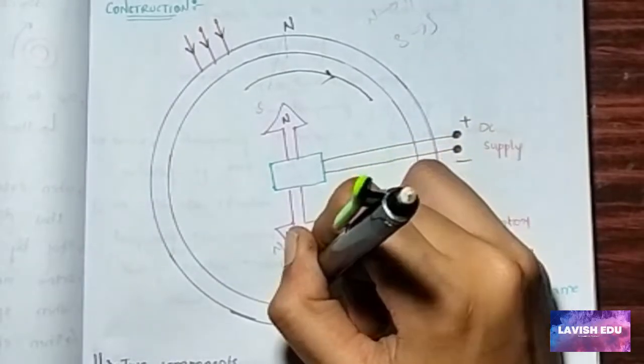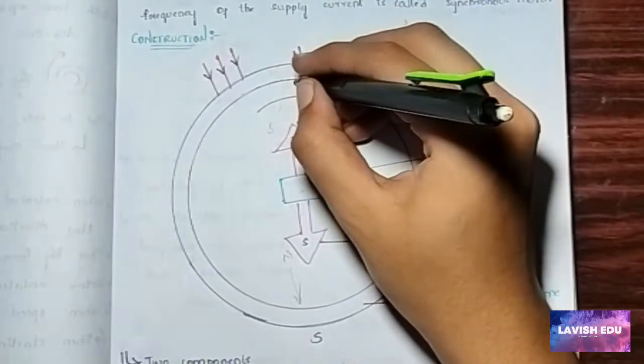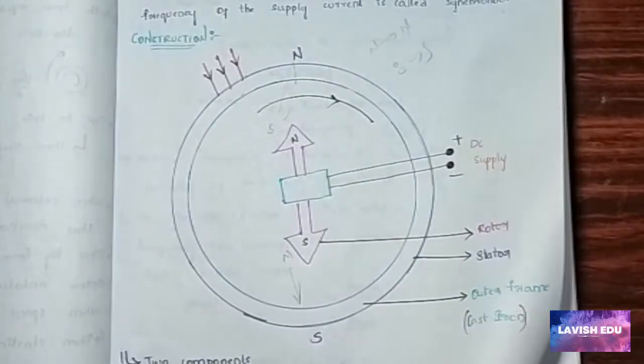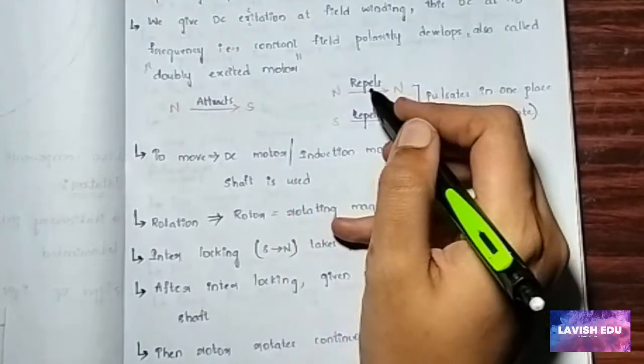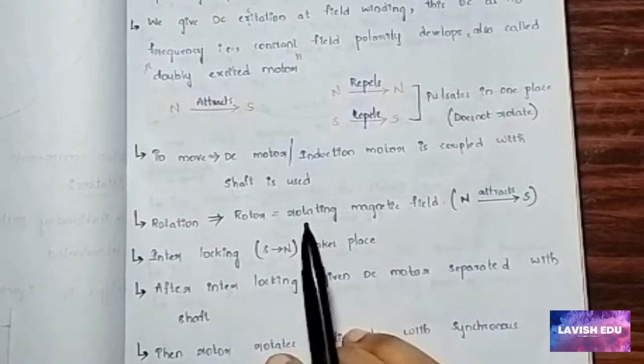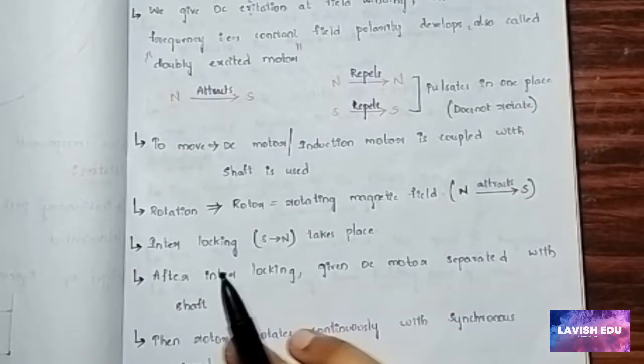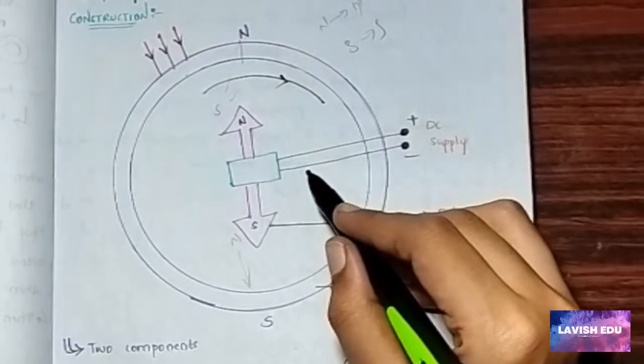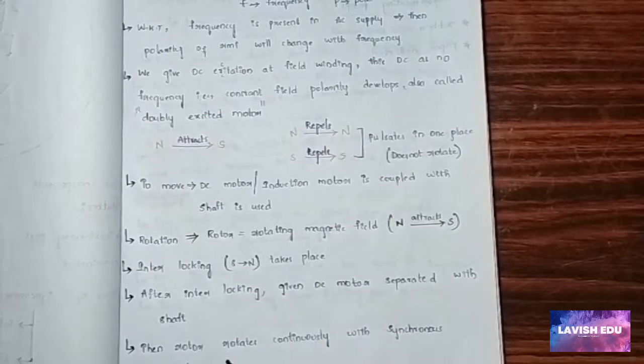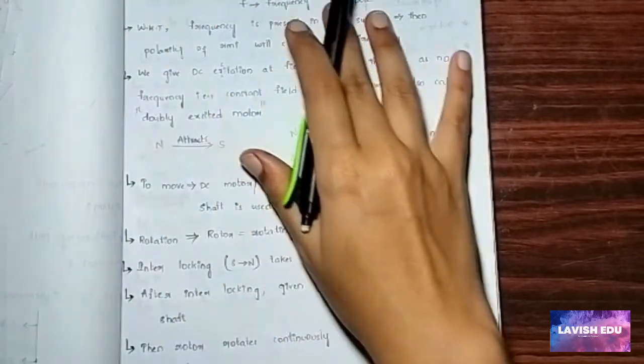The rotor won't rotate, it fluctuates in this direction as south is attracted by the north and north is attracted to south. As they are attracted to each other, they are interlocked. Interlocking of the south and north poles takes place. After interlocking, the DC motor separated with the shaft. The central part is called the shaft. Then the rotor rotates continuously with synchronous speed.